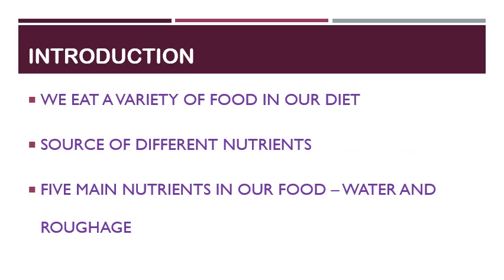Introduction: We all eat a variety of food in our diet. All these food items act as a source of different nutrients that are essential for our body. There are 5 main nutrients in our food along with water and roughage. These nutrients are carbohydrates, fats, proteins, minerals and vitamins.